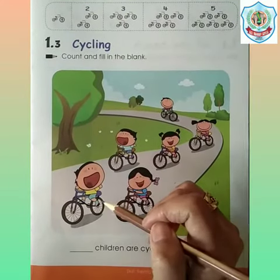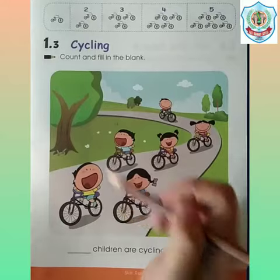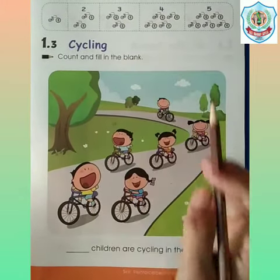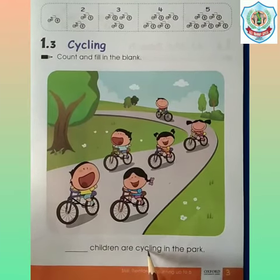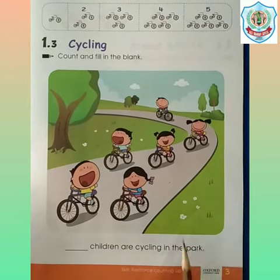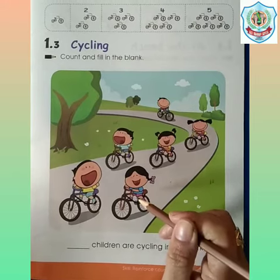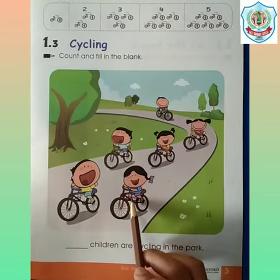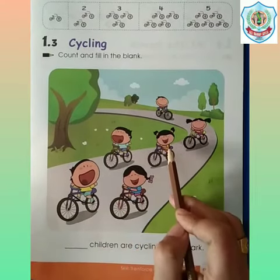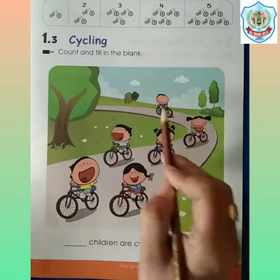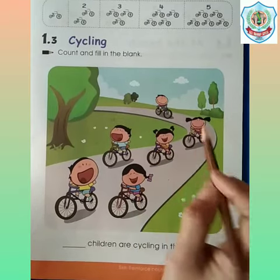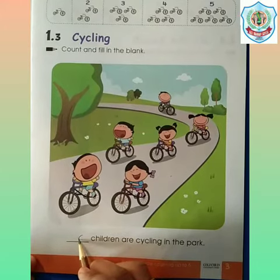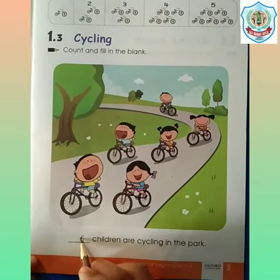Here some children are cycling in the park. Now we have to count and fill in the blank. Dash children are cycling in the park. Now we will count how many children are there: 1, 2, 3, 4, 5, 6. There are 6 children. So we will write number 6. 6 children are cycling in the park.